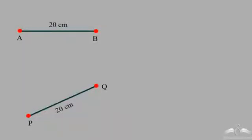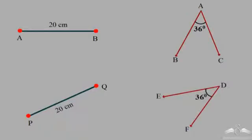We have two line segments AB and PQ, both of length 20. Since the length is the same, AB is congruent to PQ. Note that the position of these two lines does not matter. Similarly, two angles can be said to be congruent as long as the measure is the same. Here both angles measure 36 degrees, so angle BAC is congruent to angle EDF.